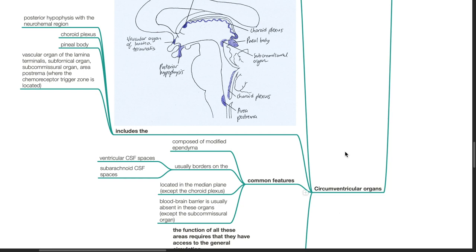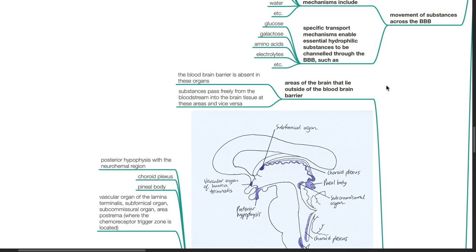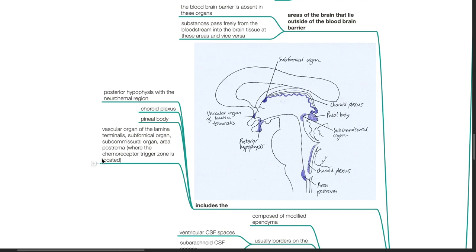Circumventricular organs. These are areas of the brain that lie outside of the blood-brain barrier. The blood-brain barrier is absent in these organs. Substances passes freely from the bloodstream into the brain tissue at these areas and vice versa. This includes the posterior hypophysis with the neurohemal region or the posterior pituitary.